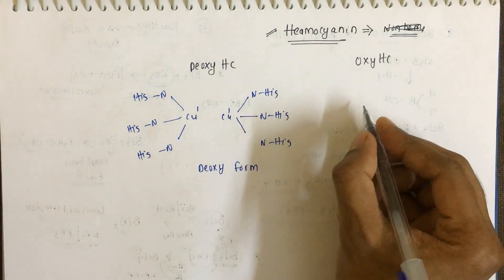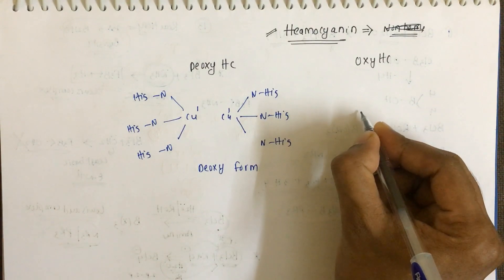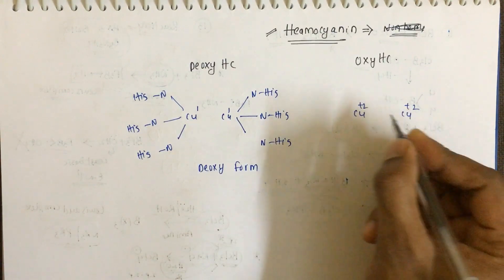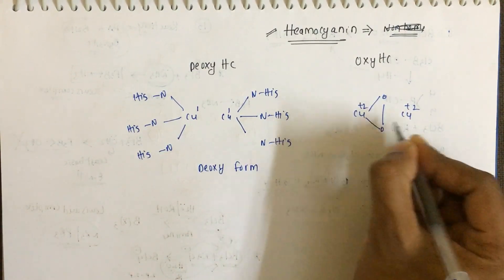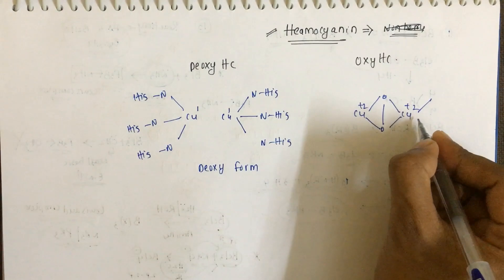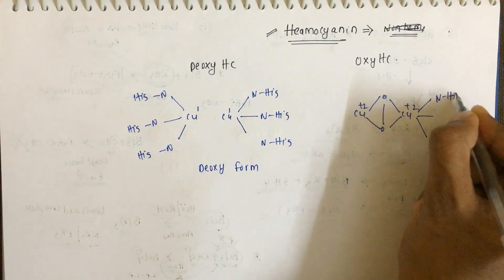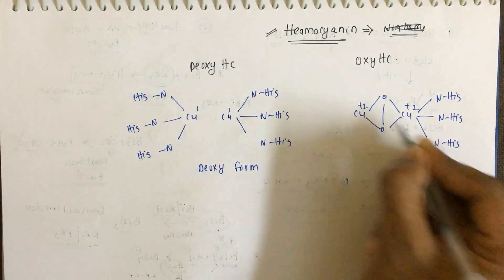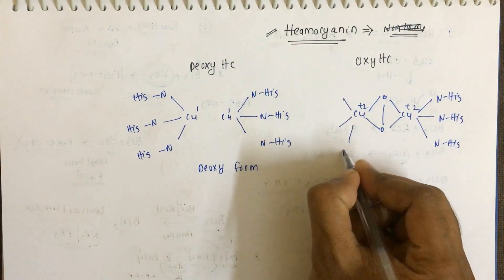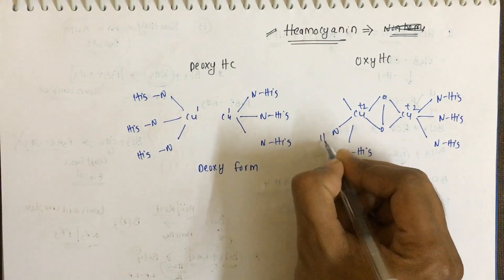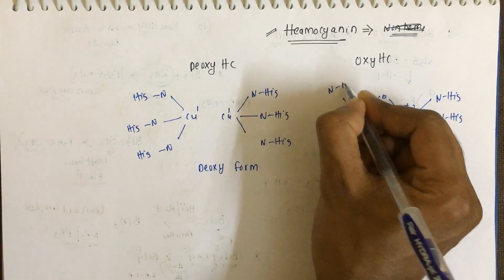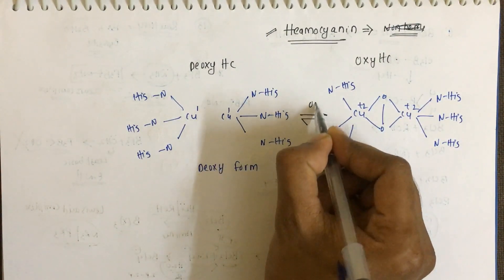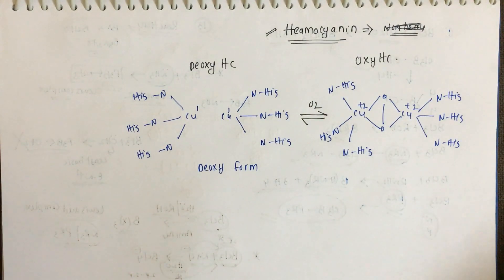In the oxy form, copper is in the plus two oxidation state and oxygen is binding like this, with histidine ligands coordinated on both sides. This is a reversible process.